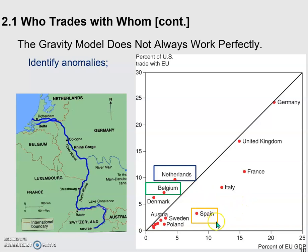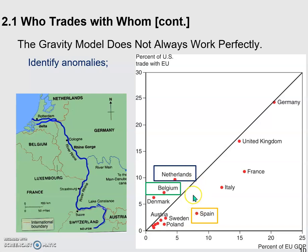At the same time, we find that Spain, given its size, actually trades much less with the United States than the gravity model would predict. This might be because of language and cultural barriers — they speak different languages and have different cultures. That could be one reason Spain actually trades less than the predicted value.